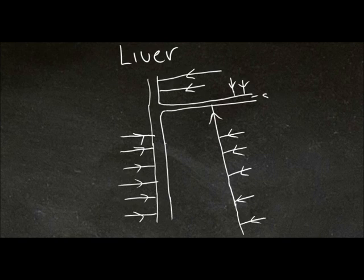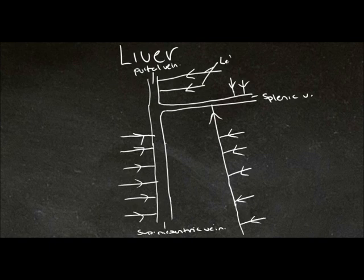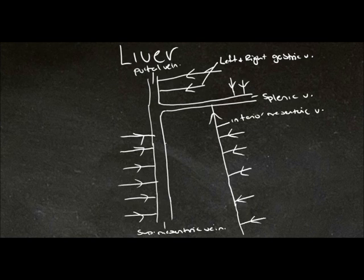Here we have our splenic vein and our superior mesenteric vein coming up and forming the portal vein. Feeding that nutrient-rich but oxygen-poor blood into the portal vein, we also have the left and right gastric veins as well as the inferior mesenteric vein and other veins coming into these main veins.